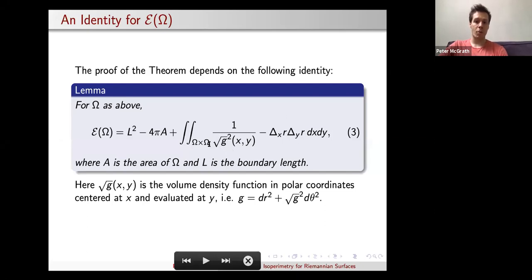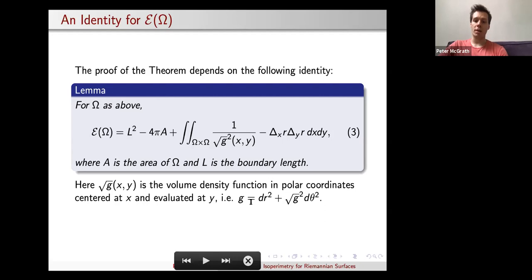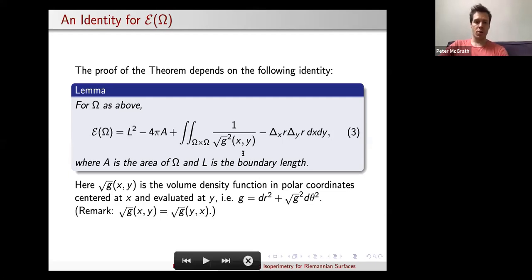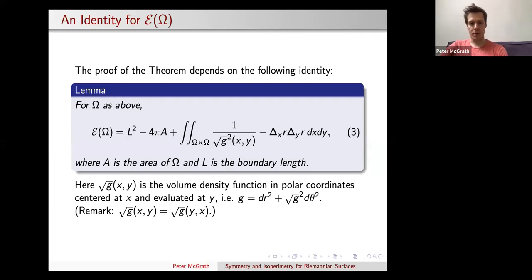Let me explain the √G² notation. Here √G is the volume density function: if I fix X and write the metric locally in polar coordinates about X as dr² + G²(r,θ) dθ², then √G is basically the volume element. It turns out that √G is symmetric in X and Y — this is a well-known fact that is not extremely difficult to see but is very useful to know.